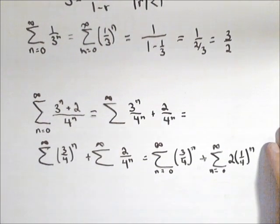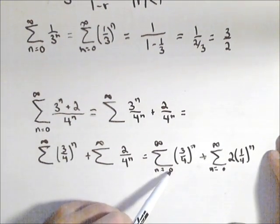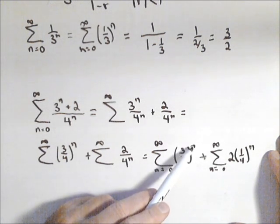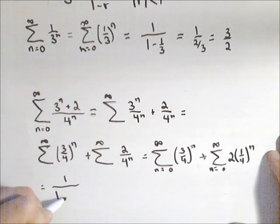So now we're going to apply our formula in each of these. Remember always calculate your first term. At 0, 3 fourths to the 0 is 1. So the first one is going to be 1 over 1 minus our common ratio which is 3 fourths.